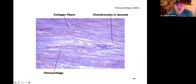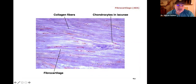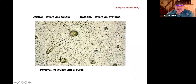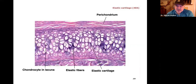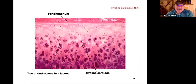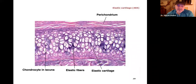This is fibrocartilage — your strongest cartilage. The intervertebral discs and the pubic symphysis are made of fibrocartilage. This is elastic cartilage, found around the nose, ear, eustachian tube, and lungs. And this is hyaline cartilage — your articular cartilage near freely movable joints.